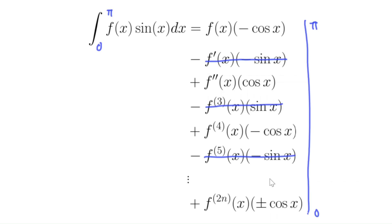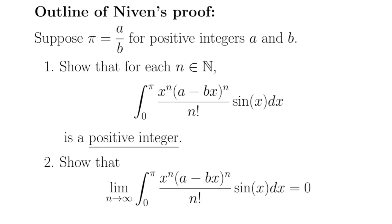So long story short, this whole integral is an integer — which is exactly what we wanted to show. And in fact it's a positive integer, because our integrand was positive between 0 and pi. So we've completed step 1: if pi is written as a over b, then these integrals are positive integers for every N. But step 2 says that as N approaches infinity the integrals approach 0 — so these positive integers approach 0, which is a contradiction.